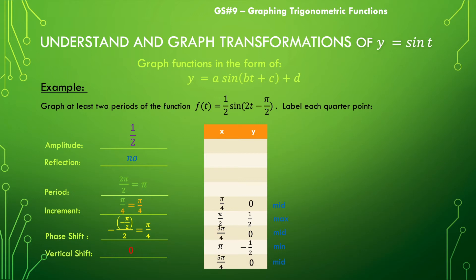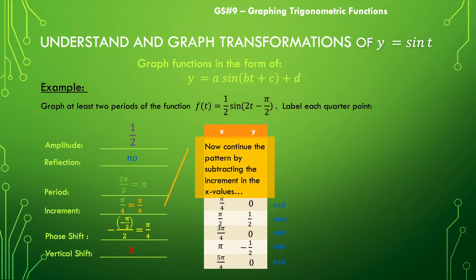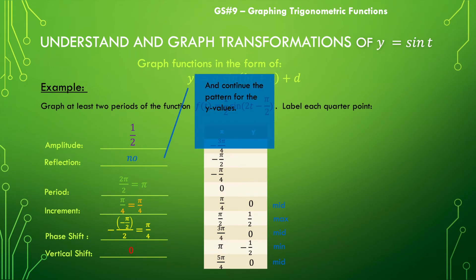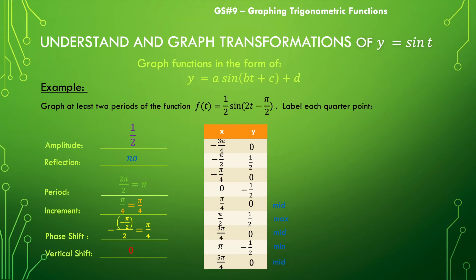As we continue our pattern in our x values, we are going to subtract pi over 4 from that starting x value, going backwards. So that would be zero, and negative pi over 4, and negative 2pi over 4 which is negative pi over 2, and then negative 3pi over 4. Continuing our y pattern we'd have a couple more zeros and then a positive and negative one-half. So we have a nice table of values to plot our points.